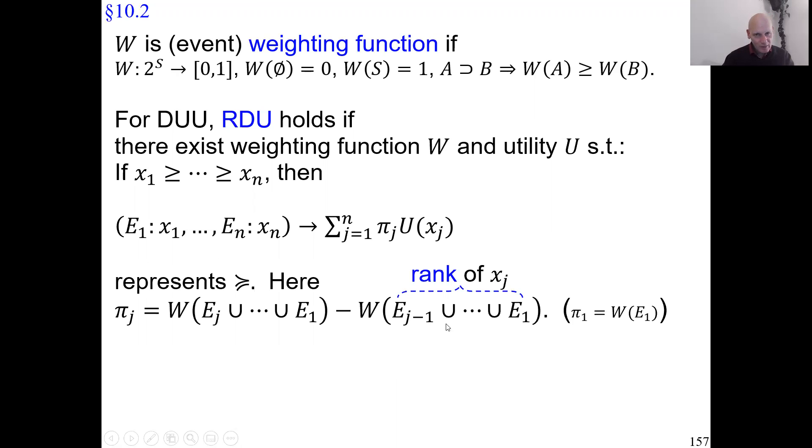Here is the definition. First a term. This event, I call it the rank of outcome x_j. It is the event of receiving an outcome ranked better. So now it's not a probability, but an event. You see, I'm here doing everything the same, only events instead of probabilities. And the decision weight is the marginal W contribution of the outcome event to the rank. That's what the difference is. So completely analogous to risk again.